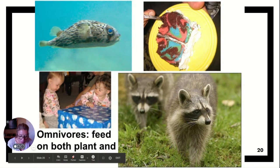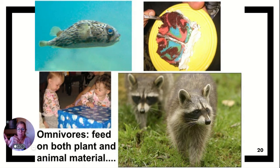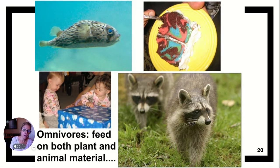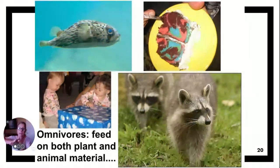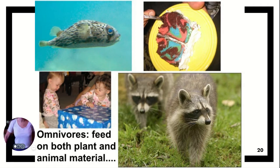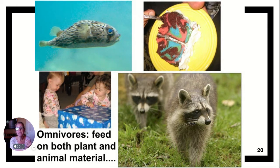Now let's move on to omnivores — they can eat multiple things. They will eat plant material and animal material. Biologically, you are considered an omnivore. The reason I know that is by your dentition: you have sharp canines for cutting and tearing flesh, and broad molars in the back for grinding plant material and breaking cell walls. I also know by the length of your intestines — a carnivore like a lion has shorter intestines because it's easier to digest animal material than plant material.